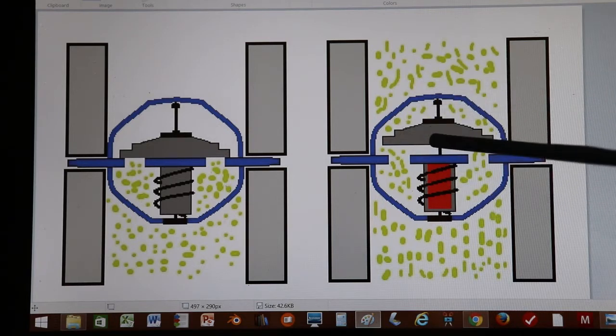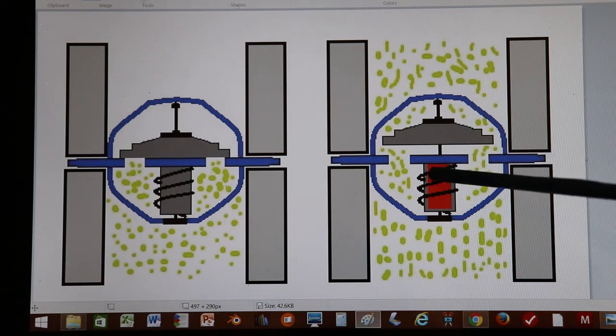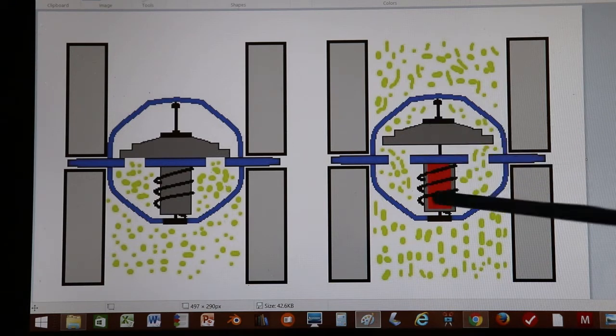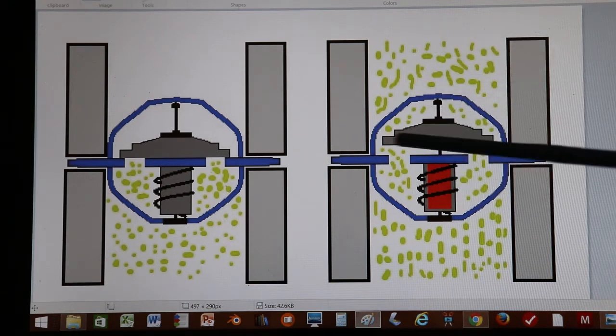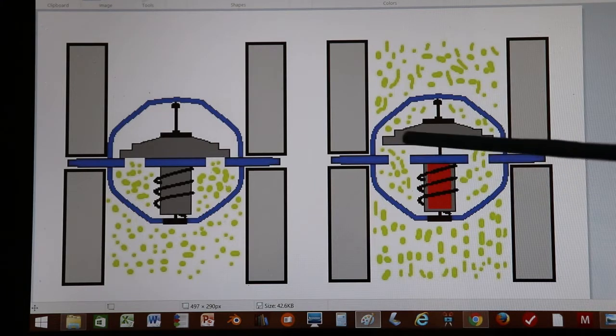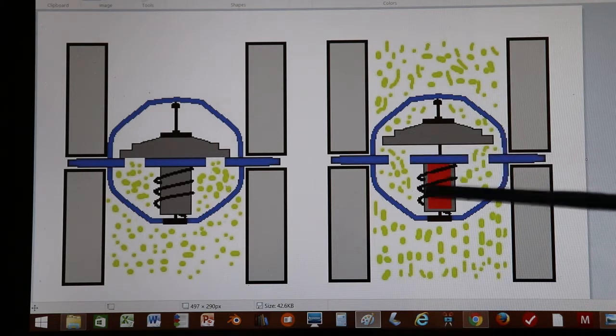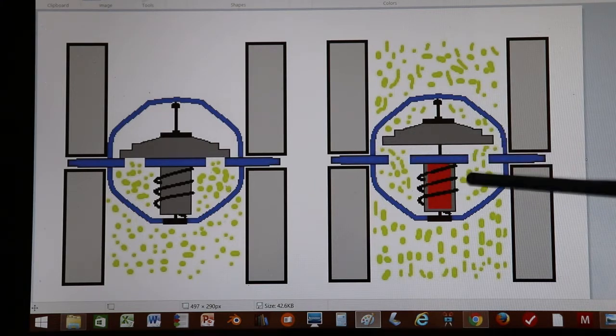As this wax cools, the valve will close. But sometimes this valve will either get stuck shut because of corrosion or dirt, or the wax will leak out, or the wax just gets old and doesn't expand right.